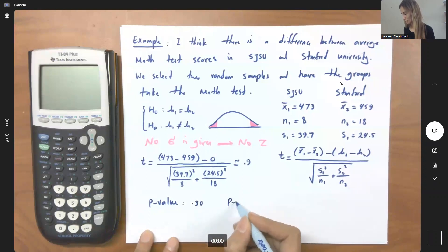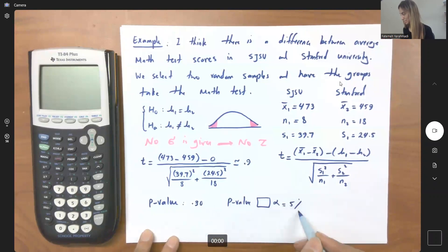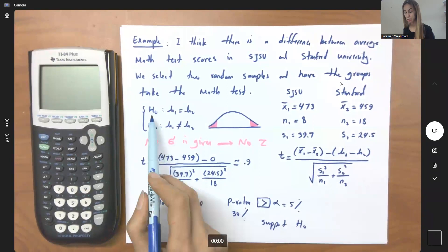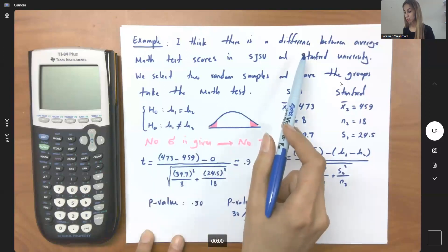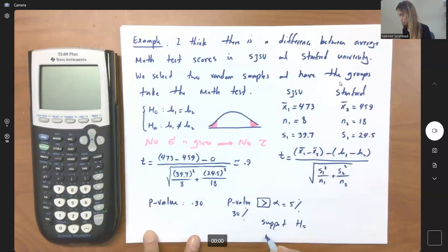So let us compare p-value and alpha. Alpha is not given to us, so let us select alpha to be 5%. So obviously 30% is more than 5%. Since p-value is more than alpha, we're going to support the null hypothesis. Since we are supporting the null hypothesis, and here the alternative hypothesis is the actual claim, we're going to reject the claim.